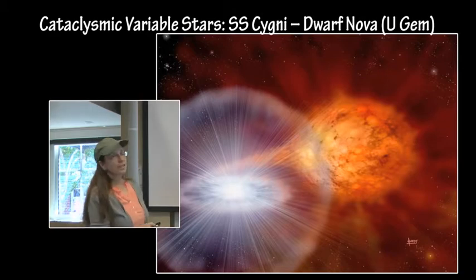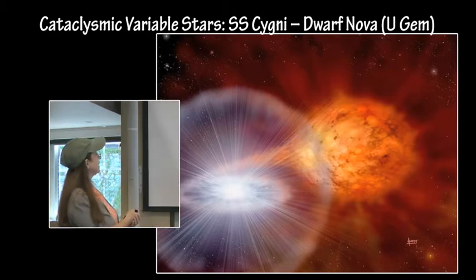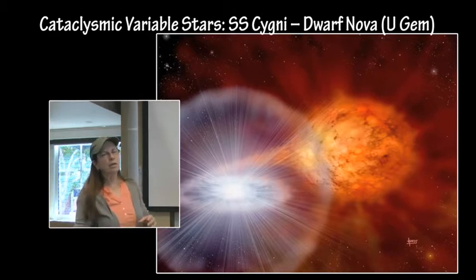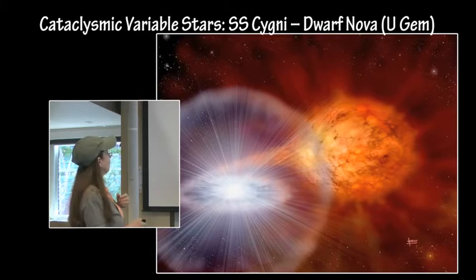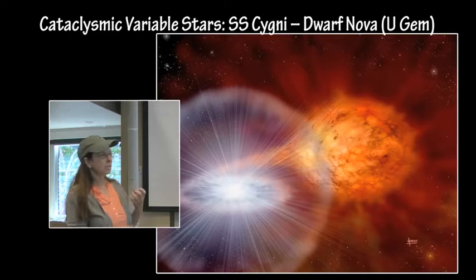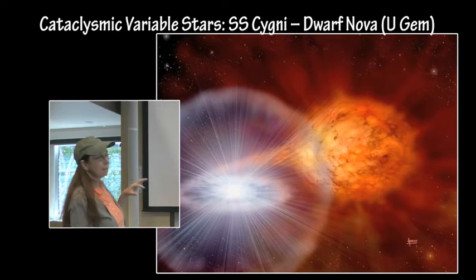This is SS Cygni, which is a dwarf nova. It is a very close binary system. We have a very low mass, like 0.4 solar mass main sequence star with a 0.6 solar mass white dwarf. It has a 6.5-hour orbit, that's how close together they are, so there's a lot of material from the star accreting and ending up on the surface of the white dwarf.